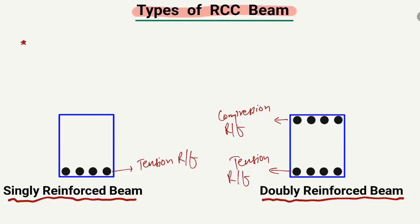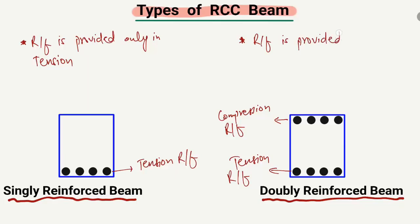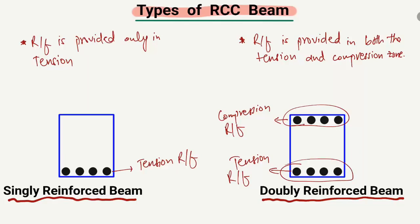In the singly reinforced beam, reinforcement is provided only in the tension zone. In the doubly reinforced beam, reinforcement is provided in both the tension and compression zones. Where reinforcement is provided only in the tension zone, that beam is known as the singly reinforced beam.